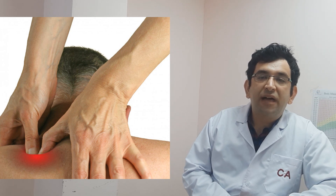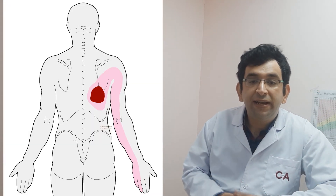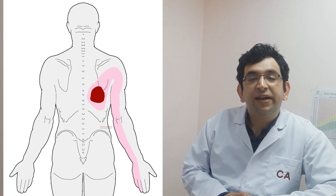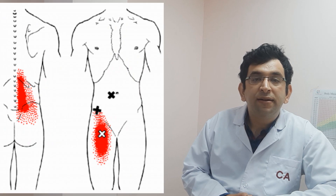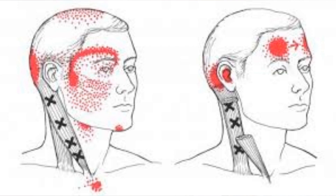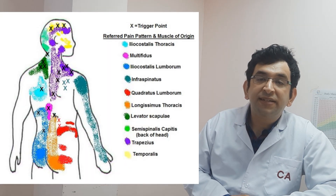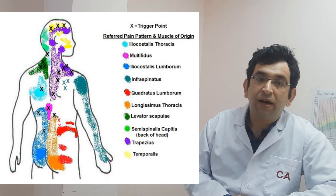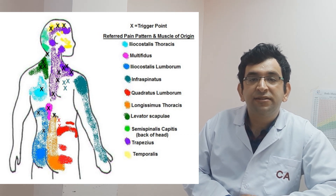Trigger points may not be painful other than with direct pressure. Only when pressure is applied directly over the point do they refer pain elsewhere to adjacent or remote areas. The origin of the pain and the area where it manifests can be different. For example, low back pain can be related to a trigger point in the abdominal muscles, while headaches can be related to a trigger point in the neck muscles. The referred pain is a characteristic feature of trigger points — it forms the basis of its name, since it relates to one area triggering pain elsewhere.